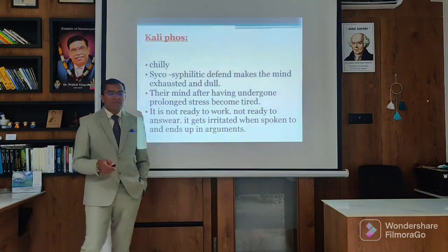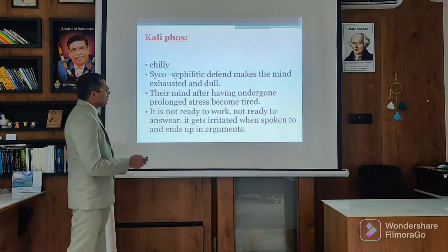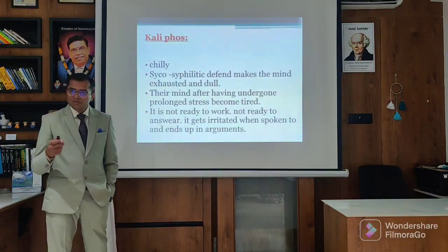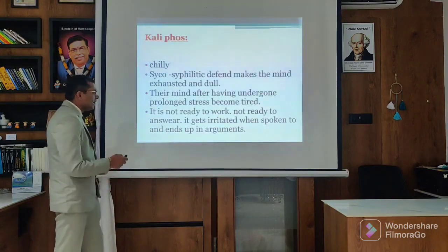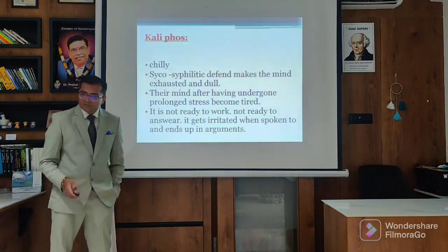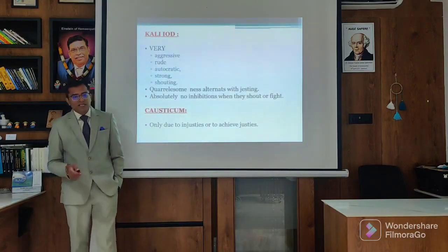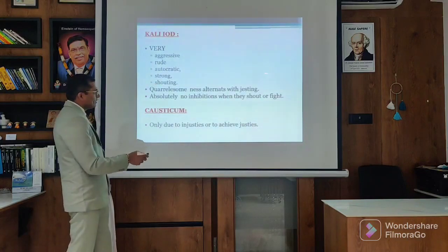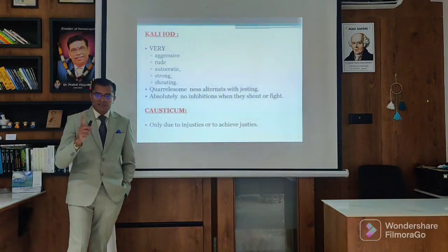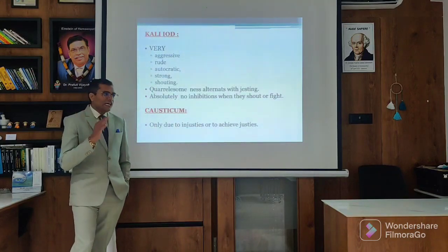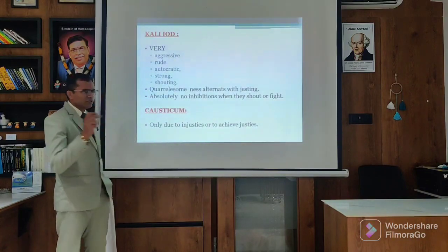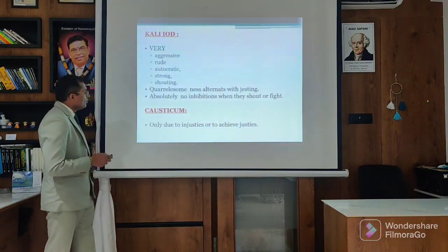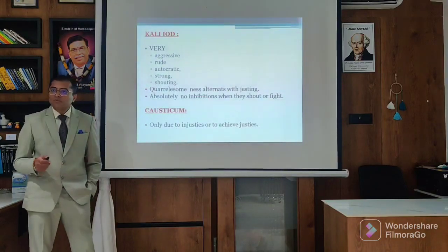Kali Phos is a psychosomatic remedy - the mind is exhausted and dull due to prolonged stress leading to tiredness. We have brain fatigue out of it. Overburdened businessmen, overburdened students, overburdened housewives - they end up with irritations and finally end up with arguments. These are the Kali. Kali Iod is very, very aggressive, rude, autocratic, strong, stouting, and quarrelsomeness alternating with jesting - very important aspect. They are very quarrelsome but they have jesting. There are three remedies: quarrelsome alternating with jesting - Kali Iod, Lachesis and Sulphur. Absolutely no inhibitions when they fight. Causticum has sensitivity to justice - they don't want injustice, that's why they quarrel. They have sympathy for others, so they become union leaders - they are a positive remedy.